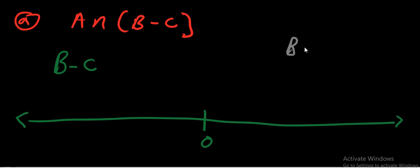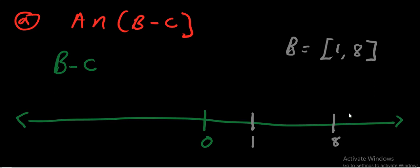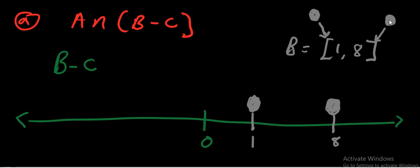We are now going to indicate set B on this number line. Set B is one comma eight, block brackets. We put one and eight on the number line. The block bracket is a closed bracket — it goes with a shaded circle, meaning that the element is part of the set. So we shade one and eight, because both have block brackets.